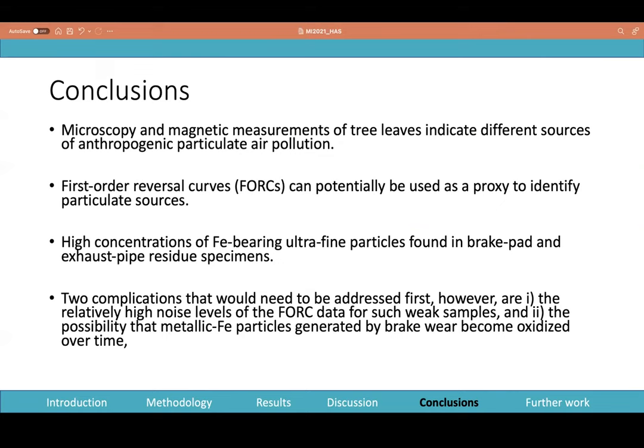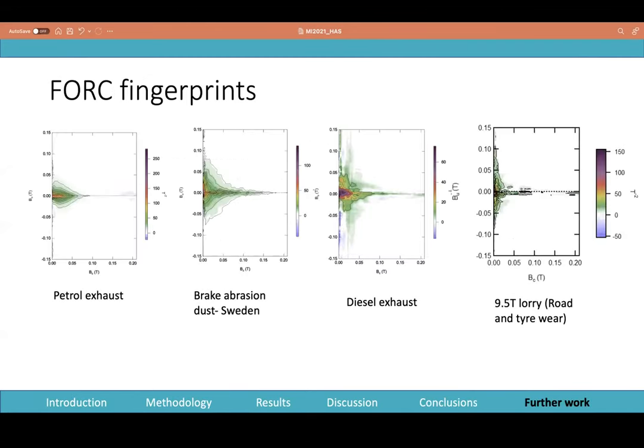Conclusions: we can use FORCs to potentially identify these particulate sources. We found high concentrations of Fe-bearing ultrafine particles in both our specimens, but they weren't exactly seen in our SEM because of the lack of resolution. But we need to address two complications: one is the relatively higher noise levels of FORC data if the samples are weak, for example the fresher samples, and the possibility that any metallic iron which possibly originally comes from brake wear is oxidized over time on the leaves.